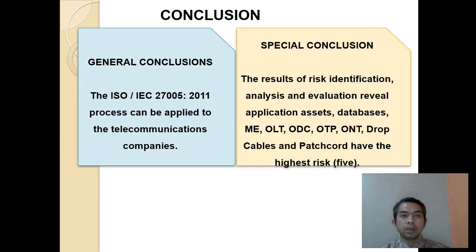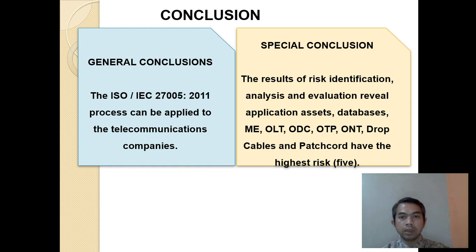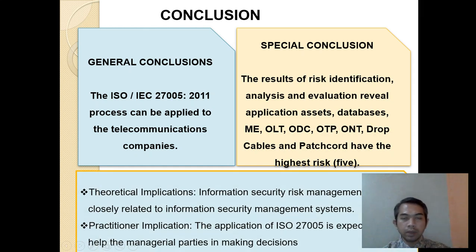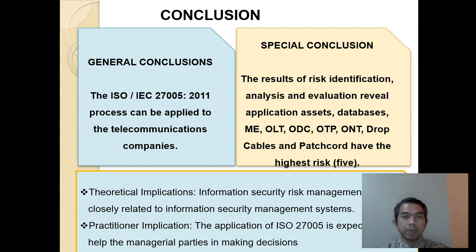For the conclusion: the ISO 27005:2011 process can be applied to telecommunication companies. The specific conclusion is that the results of risk identification, analysis, and evaluation show that application assets, databases, MA cable, etc. are at the highest risk. For the theoretical implication, information security risk management is closely related to information security management systems. The application of ISO 27005 is expected to help managerial parties in making decisions. Thank you.